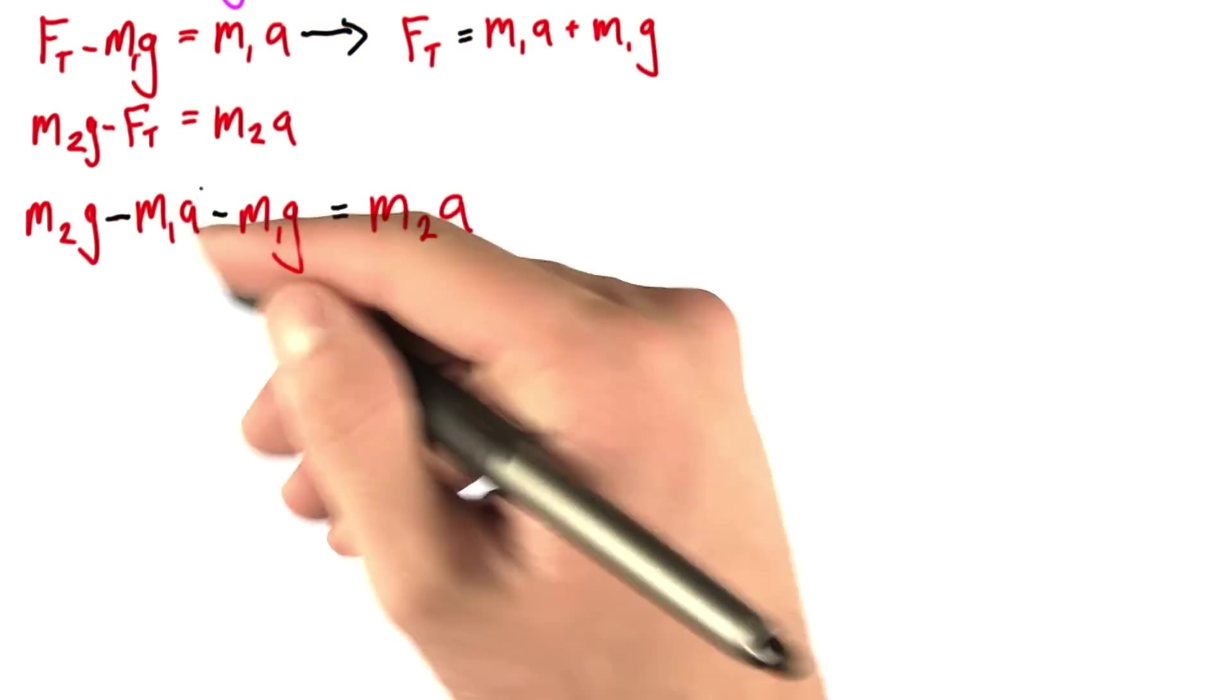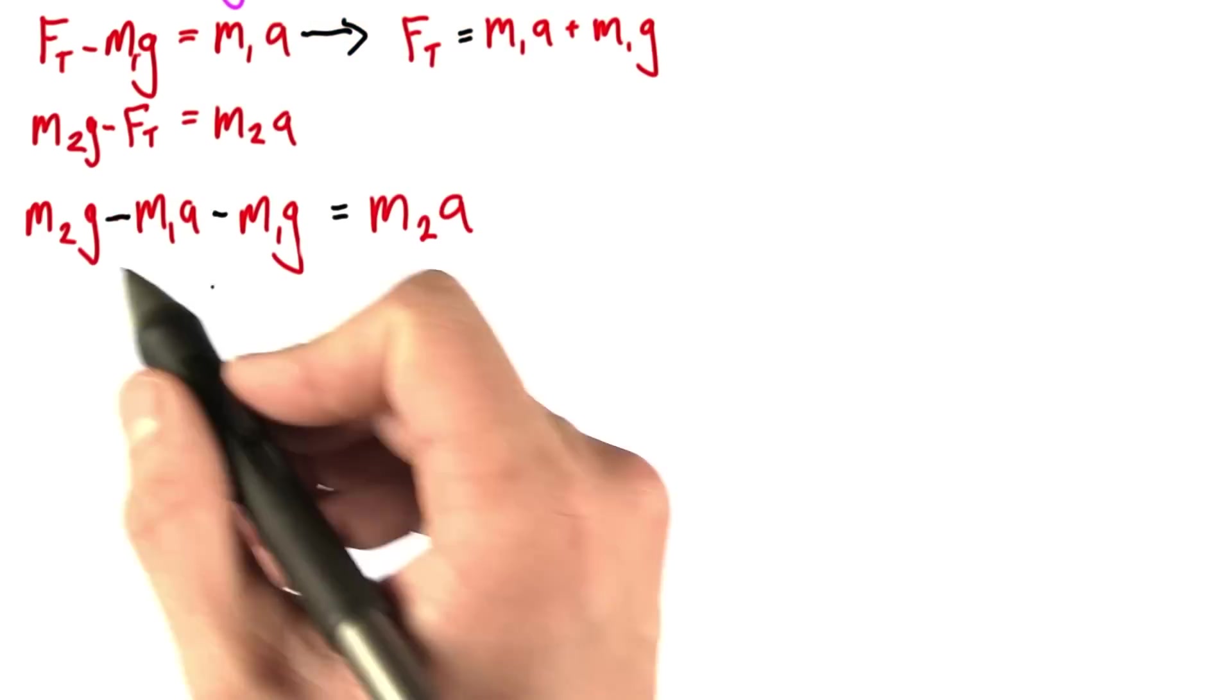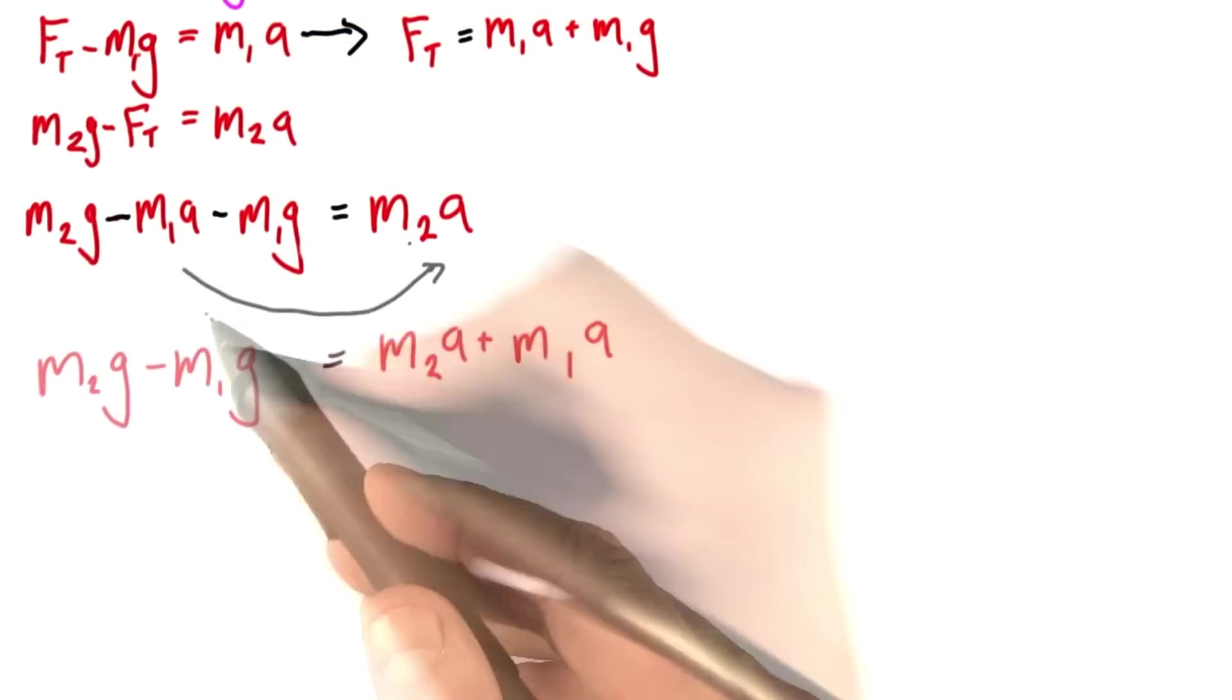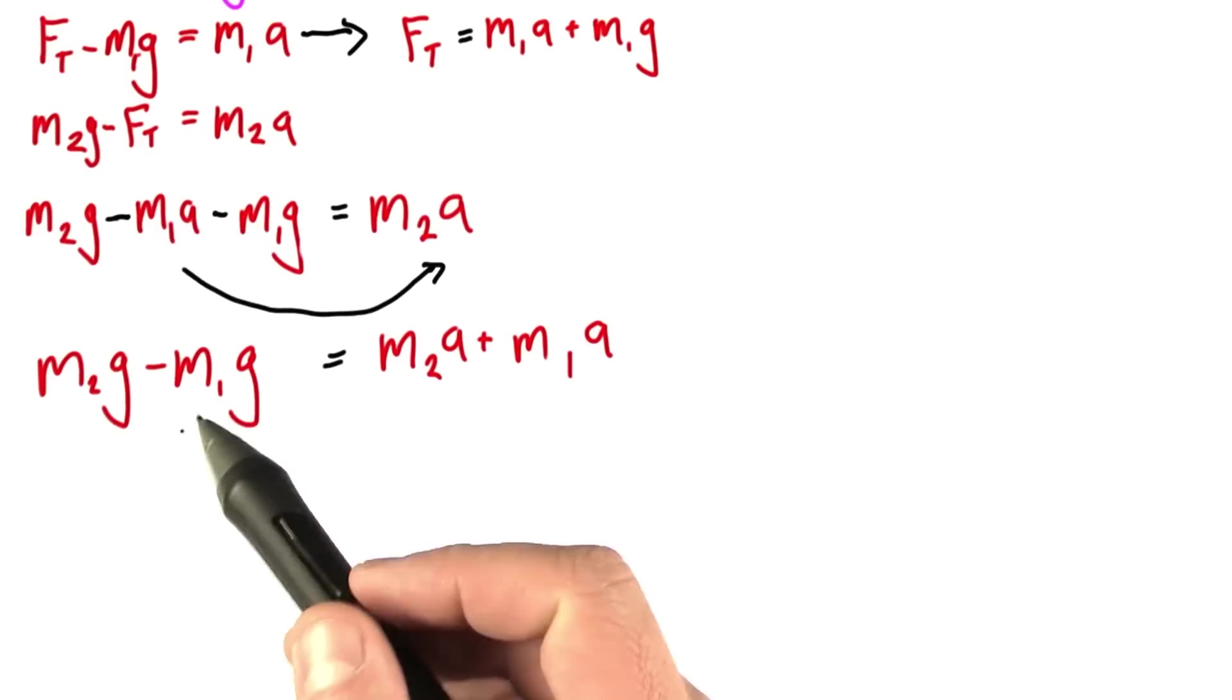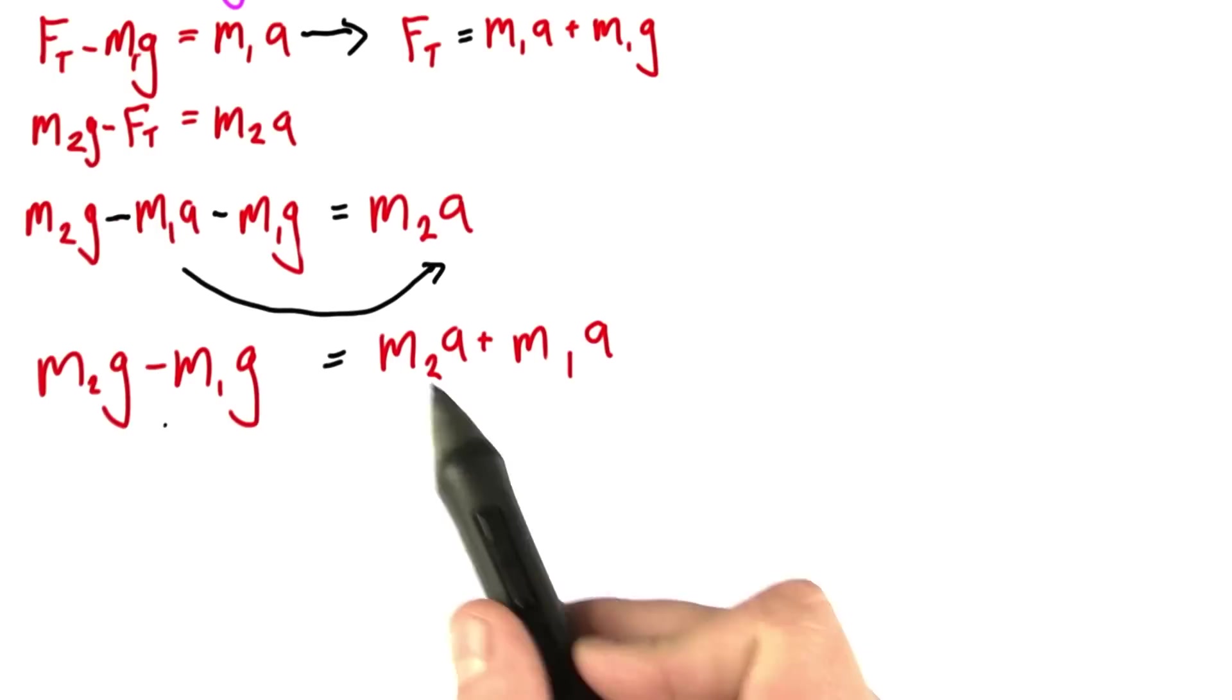Well now I'm solving for a, so let's group all the a terms together. I'm going to move this a over here. Okay, so now that we've done that, I'm going to take out the common factors of each of these terms, and each of these terms.